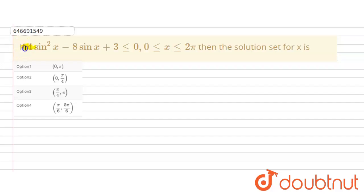Hello students, here the question is given: if 4sin²x - 8sinx + 3 is less than or equal to 0, and x range is given 0 to 2π, then the solution set for x is what? The options are given here. So let's solve this question.